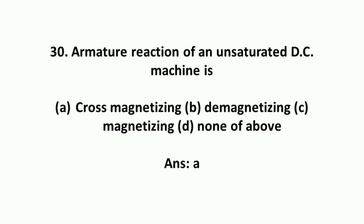Armature reaction of an unsaturated DC machine is cross-magnetizing.